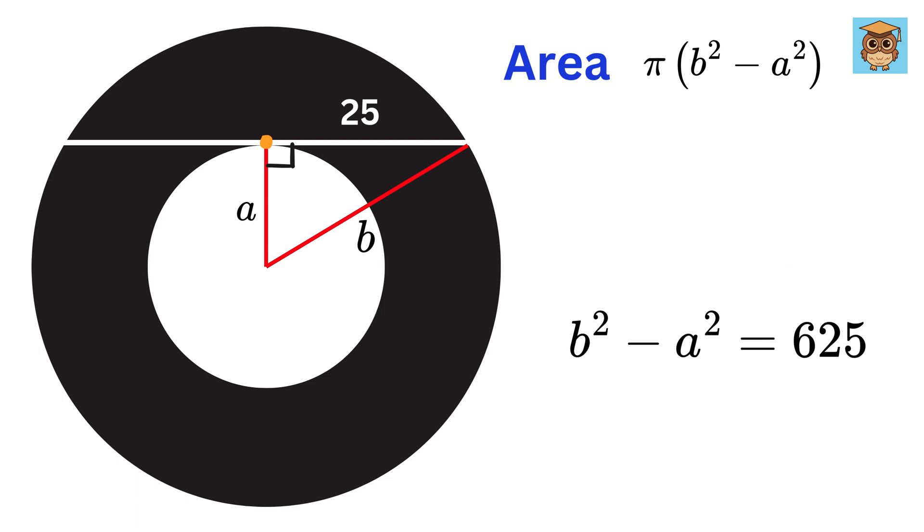Wow! Amazing! You can see that we don't need any other information here because the shaded area is simply π times (b² - a²), which becomes 625π. Don't forget to put the centimeter square.